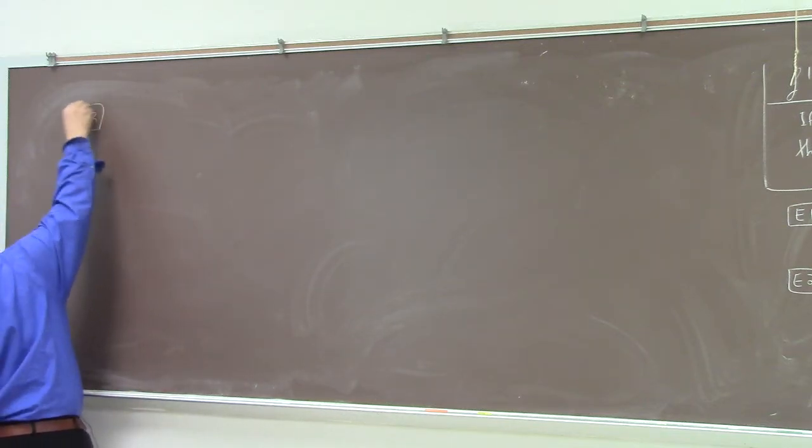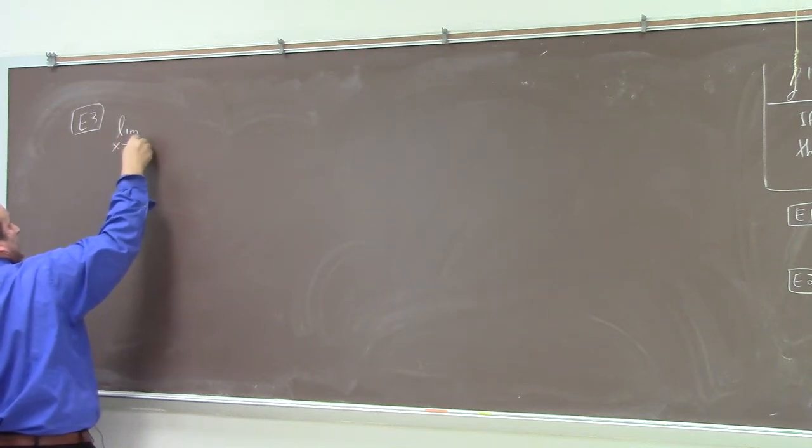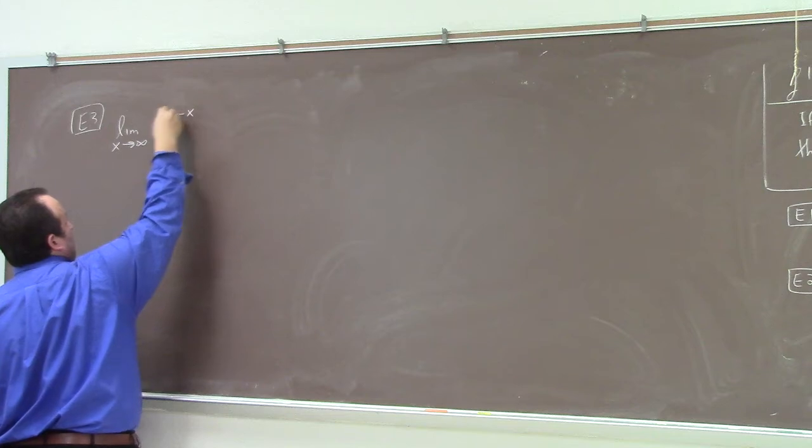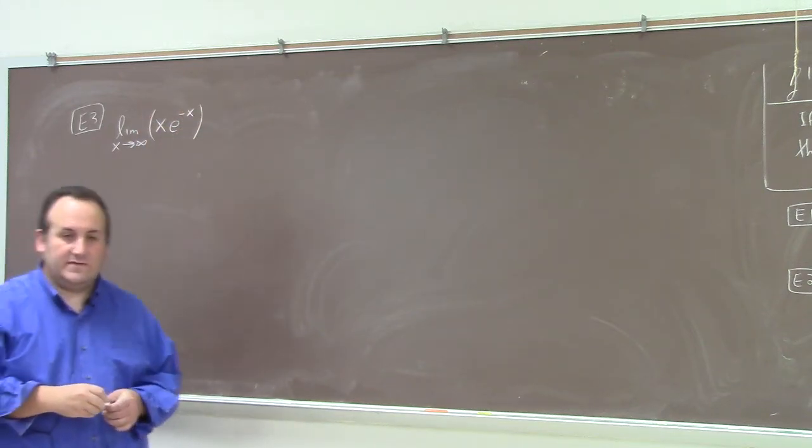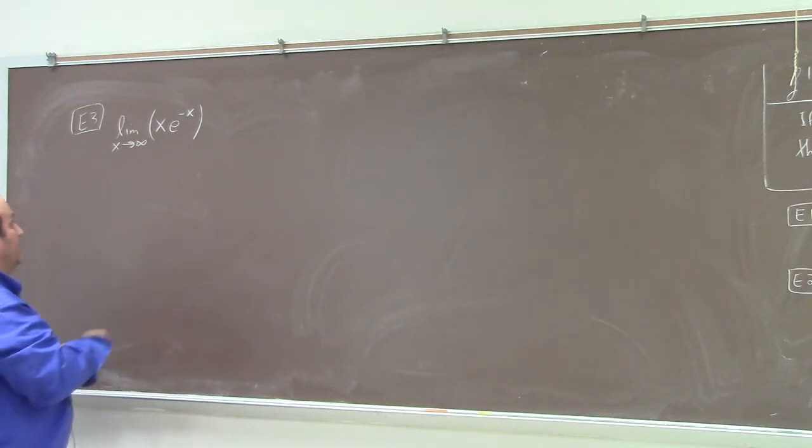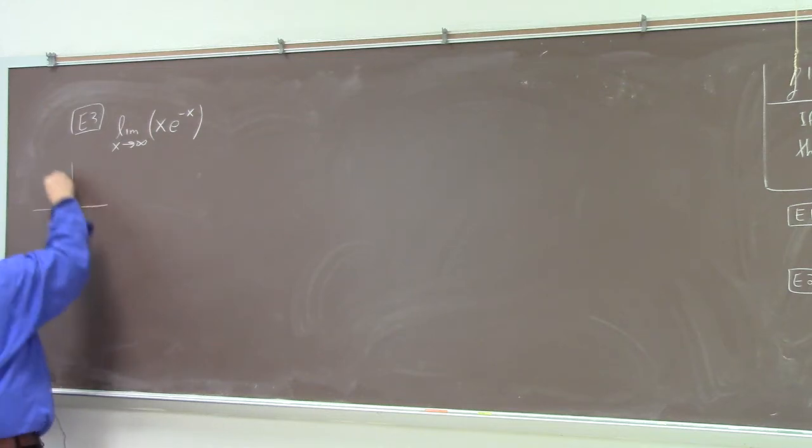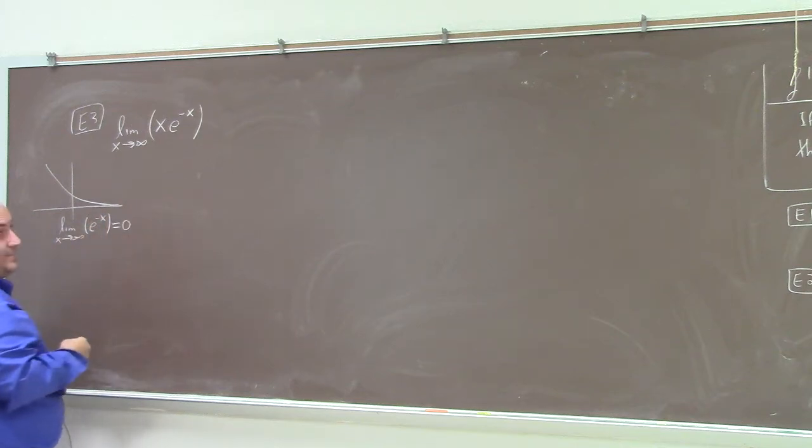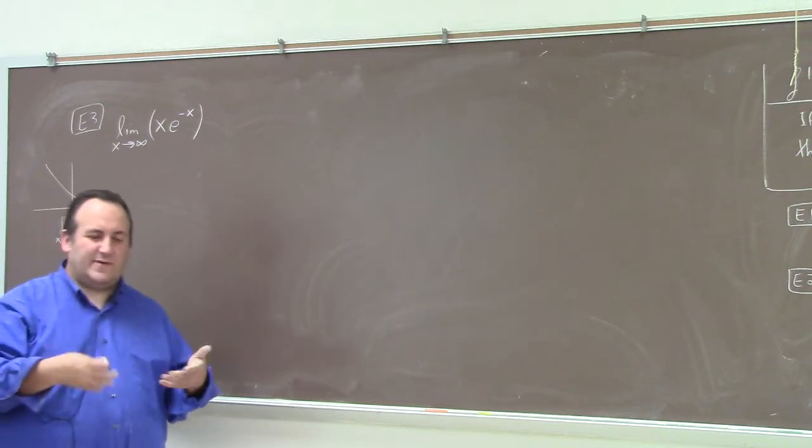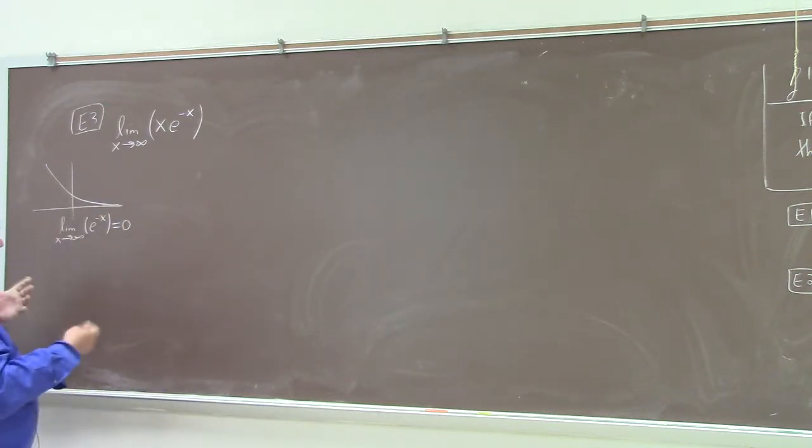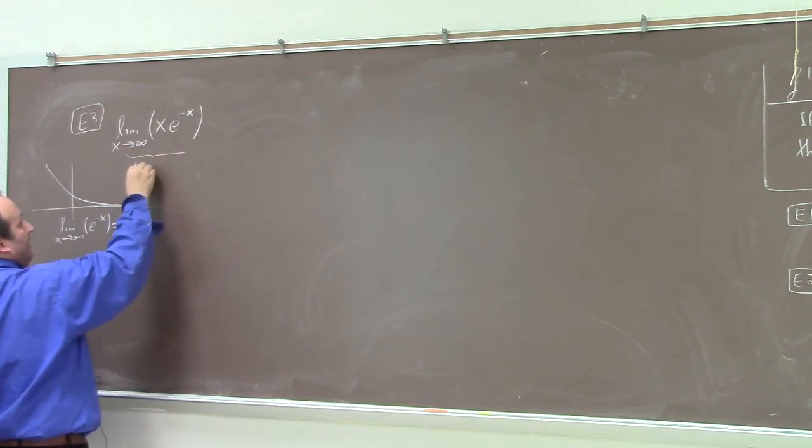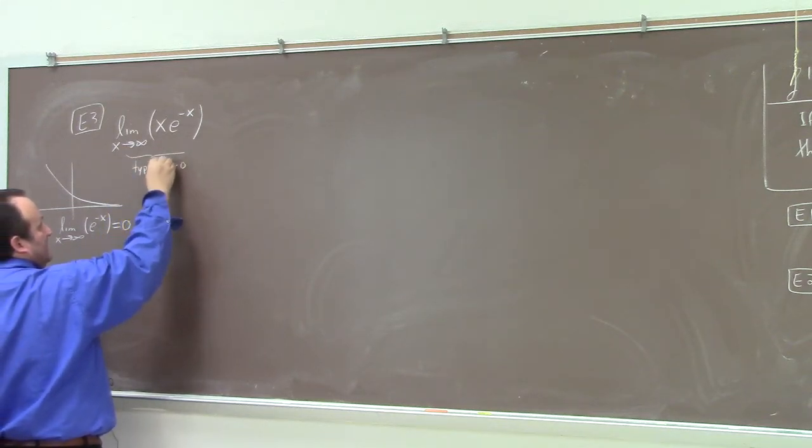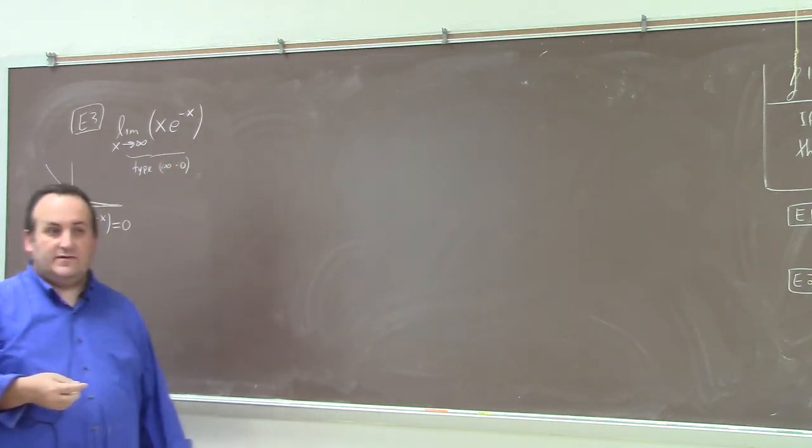So, example 3. Suppose we have the limit as x goes to infinity of x e to the minus x. Now, this is a problem that has indeterminate form. You see, the thing is, e to the minus x, the graph of that is this. So, the limit as x goes to infinity of e to the minus x is 0. And that just makes sense if you think about how e to the minus x works for a large number. But this is type infinity times 0. This is one of the indeterminate forms I mentioned earlier in the course. So, we can't just evaluate it.